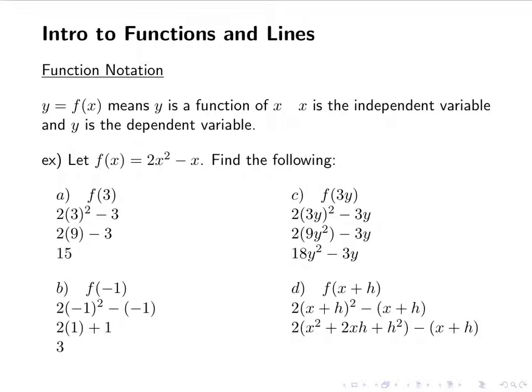And we have 2 times x squared plus 2xh plus h squared. So don't forget the O and the I from FOIL. You cannot just distribute the squared and say it's x squared plus h squared. So you need to remember the middle terms. I'm going to distribute the 2 and distribute the negative. So I have 2x squared plus 4xh plus 2h squared minus x minus h. None of those terms are like terms, so I can't do anything to it. This is the best I can do.